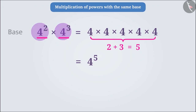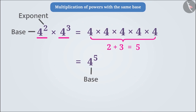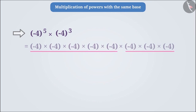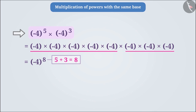The base of the numbers multiplied is equal to the base of the result, and the sum of the exponents of the numbers to be multiplied is equal to the exponent of the result. For another example: minus 4 to the power of 5 into minus 4 to the power of 3 equals minus 4 to the power of 8. Here also, the sum of the exponents equals the exponent of the result.